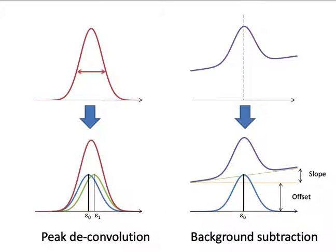For example, if you observe a single peak in XPS and you know the natural linewidth and the instrumental resolution, you can de-convolute the peak to determine how many sub-peaks are contained within it. If you see an asymmetric peak shape in the XPS spectrum, you need to consider the background effect, and then analyze the peak after the background subtraction process.